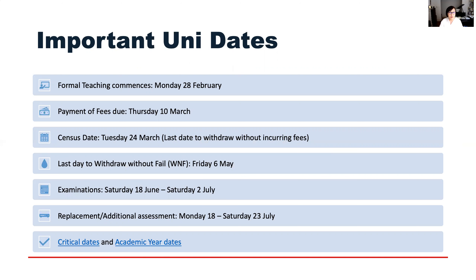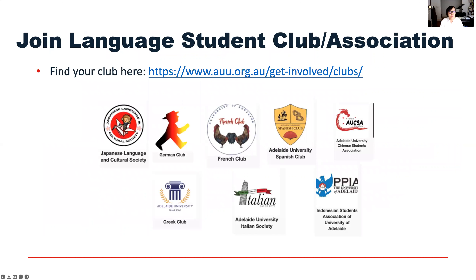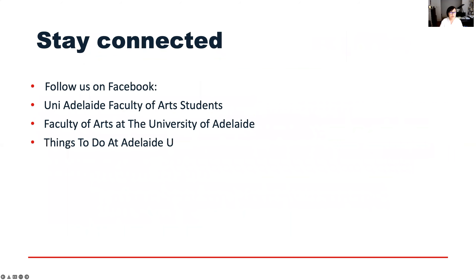Additional study support is available — there are many options. Most importantly, the Writing Centre and Studio City are there to help you with writing. Counselling services support is also available, and when you have any issues, just don't hesitate to contact them — they are extremely supportive and helpful people. I also encourage you to join language student clubs and associations. There are many, at least one for each language. The Japanese club is really very active and lots of fun. Stay connected with all sorts of social media and other connections.